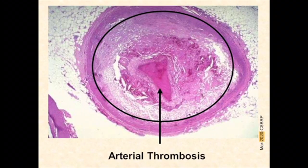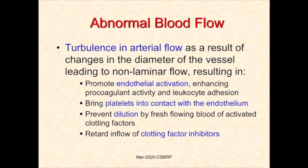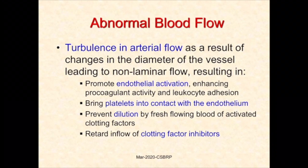Another artery shows extensive atherosclerosis with thrombus formation. The second component of Virchow's triad is abnormal blood flow, which can result from stasis or turbulence. Turbulence promotes endothelial activation, enhancing pro-coagulant activity and leukocyte adhesion; it may bring platelets into contact with endothelium, prevent dilution of activated clotting factors, and retard inflow of clotting factor inhibitors — thereby causing pro-thrombotic tendencies in areas of turbulence.